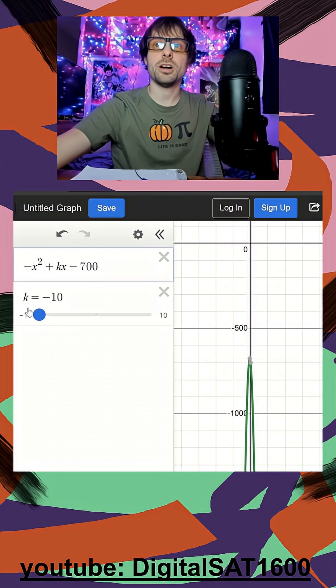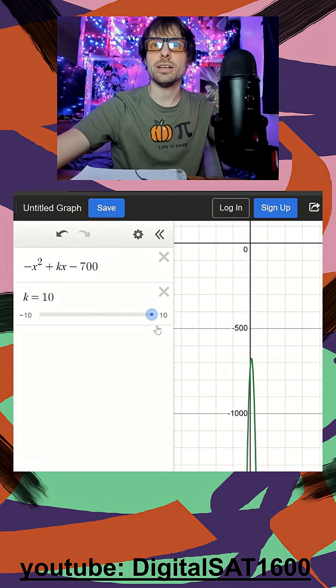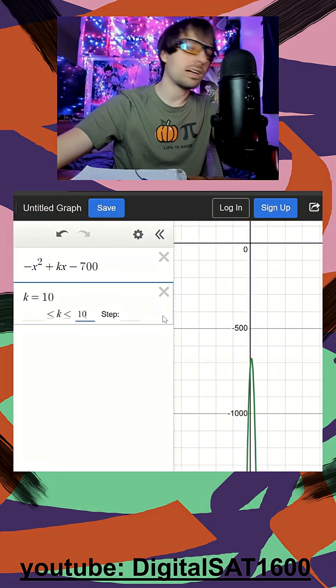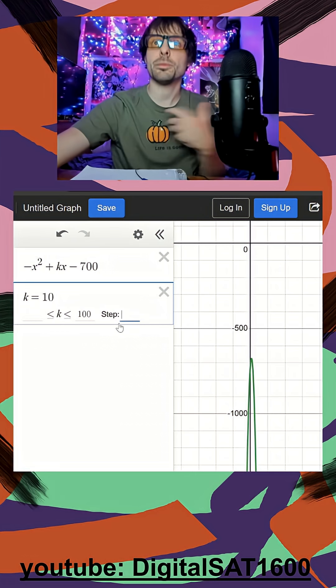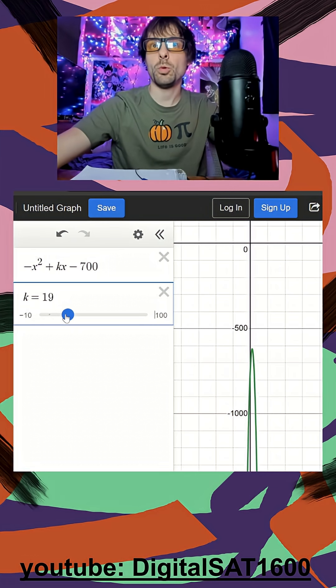And again, my goal is just to get as close as possible to the x-axis without touching it. So I might click on this, I may make that 100. I'll change my step to one, because since k is an integer, I want it to go. Your step is how much it changes by, so this will just change by ones.